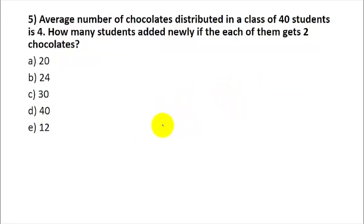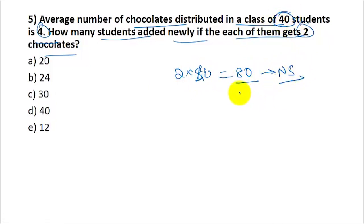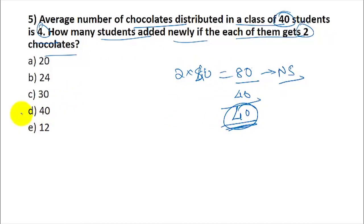Question 5: The average number of chocolates distributed in a class of 40 students is 4. How many students are added if each student then gets 2 chocolates? The average decreases to 2 and there were 40 students, so the total chocolates = 40 × 4 = 160. New number of students = 160 ÷ 2 = 80. Students added = 80 − 40 = 40. Answer is option D.